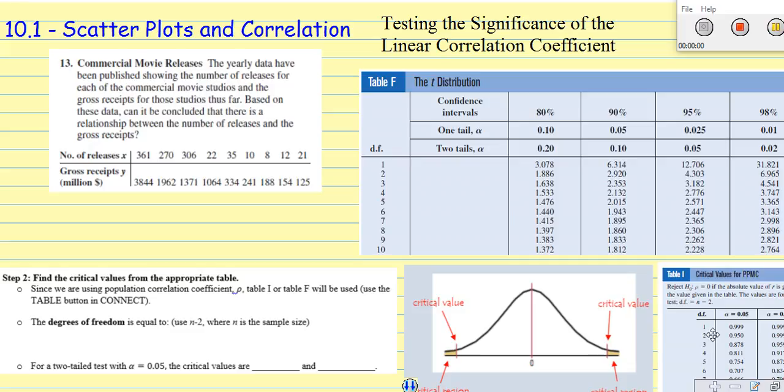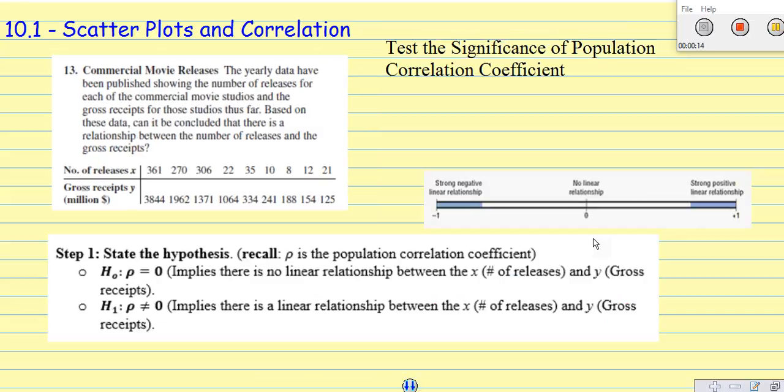In this video we're going to take a look at testing the significance of linear correlation coefficient. Basically we've got a five step process. In step number one, we're going to state the hypothesis. We've been given a sample of the population where we're trying to conclude whether there's a relationship between the number of releases, movie releases, and the gross receipts or the amount of money that's brought in.